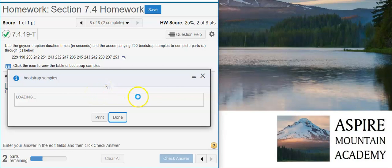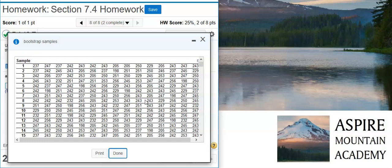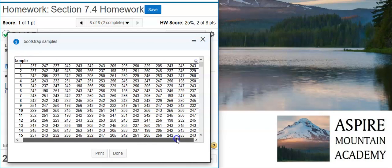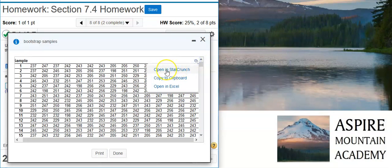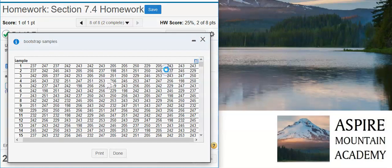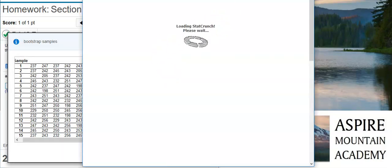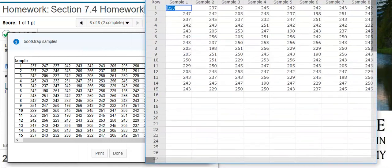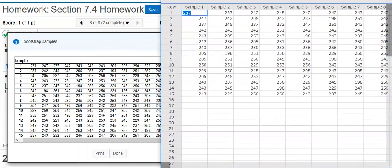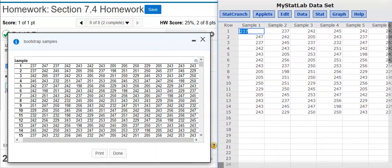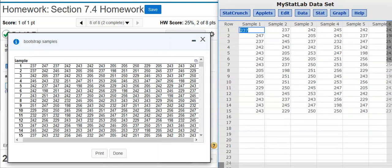It takes a while for this to load up because there literally are so many samples. You've got 200 samples and each contains 15 values. So there's a lot of data here, but that's not unlike what we see in a real world situation. I'm going to put those here in StatCrunch and resize this window to help us see better.